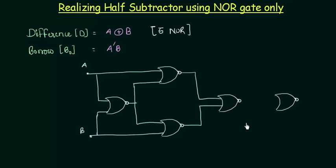Now we want to complement the output of this gate, so we'll use a NOR gate where the output acts as both inputs. This means the output will be complemented at this point.